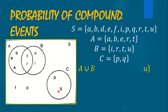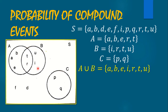For the event A union B, when we talk about A union B, we have to get the outcomes in event A or event B or both. So we combine all the outcomes: A, B, E, I, R, T, U.